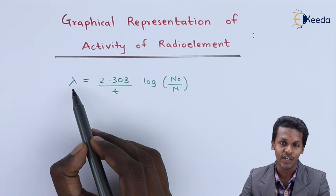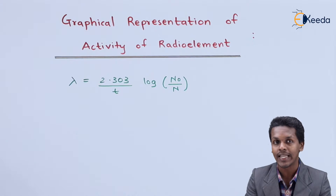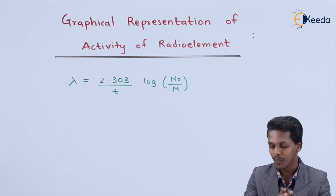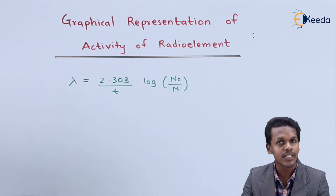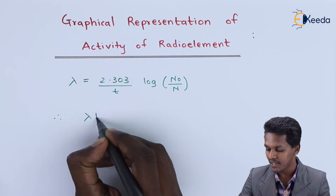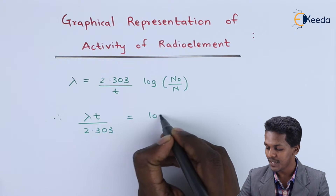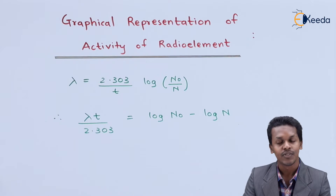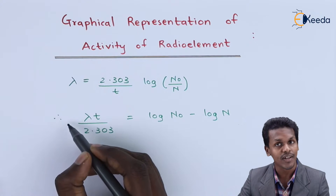And lambda means the decay constant. So here basically we are going to talk about the graphical representation — the same equation which is related to y equals mx plus c, or y equals minus mx plus c. So based on that let us see what kind of graph we could get. To simplify, what we can do is we can shift t to this side. So therefore this will be: lambda t divided by 2.303, which equals log to the base 10 N₀ minus log N.